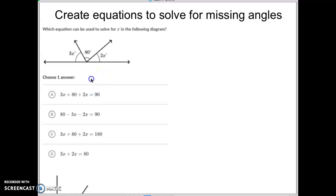Well, this one equals only 90, so that can't be right. This one equals only 90, so that can't be right. This one equals 180, so that might be right, plus it does take the 3x plus the 80 plus the 2x, so that will be right. This one only equaled 80, so that one's not right. So that's how you find that when you're given a supplementary angle.